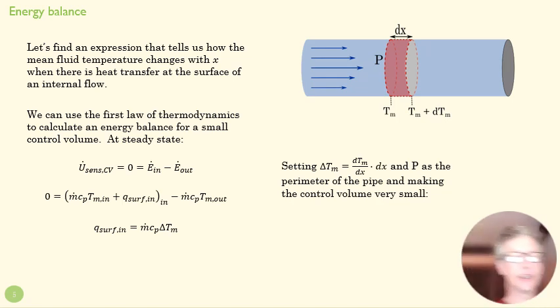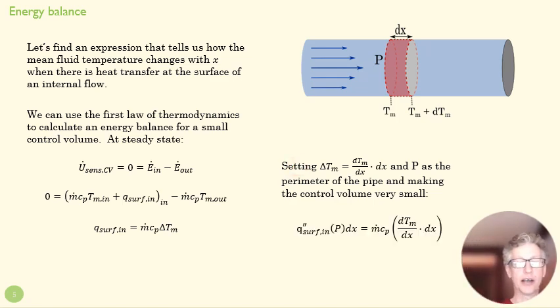We can set that delta T value to a differential dT/dx times dx. So what does that mean? Well, this is the slope of my temperature change, right? And I'm moving this far in the x direction, so that's my overall change. And then recognizing that the P is the perimeter of our pipe and making the control volume very small, in other words, turning this into a calculus problem.